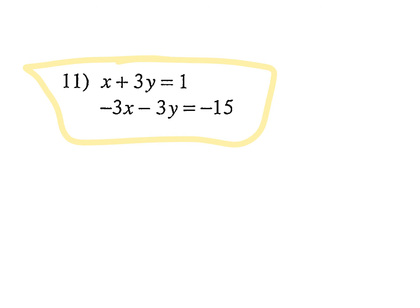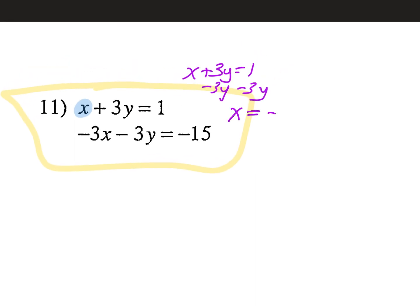Why don't we love this problem? It's not just set up on a silver platter. This is where you decide what variable to solve for and which equation to use. I'm looking at the top one — x plus 3y equals 1 — because there's no coefficient with x. I can just subtract 3y from both sides: x equals negative 3y plus 1. Could I have written 1 minus 3y? Yes, same thing. Now everywhere I see an x I'm going to plug in this expression.